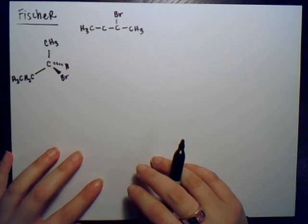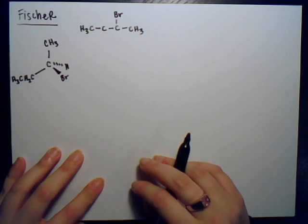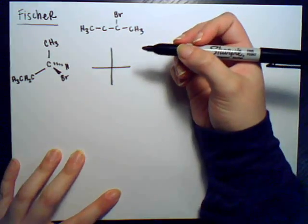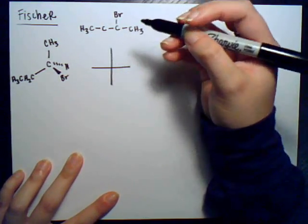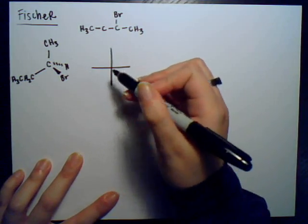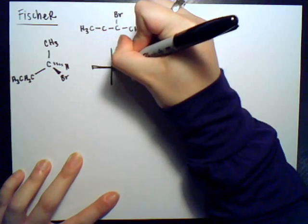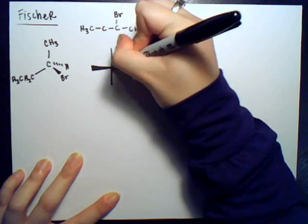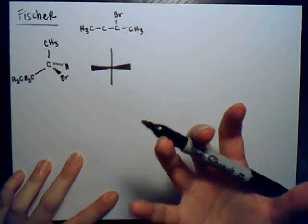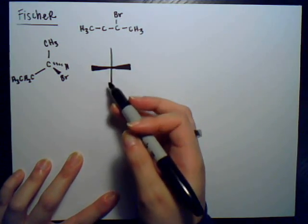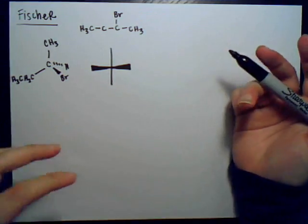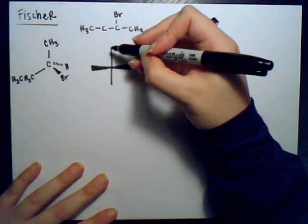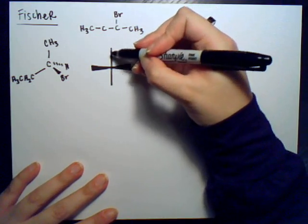A Fischer projection is a two-dimensional way of drawing a three-dimensional molecule, and this helps us manipulate it better. You draw a cross: the vertical line represents going into the page, and the horizontal line represents coming out of the page. A way I like to remember this is like a person with arms outstretched to give you a hug — the arms come towards you, so the horizontal line is like arms coming out of the page. Therefore the vertical line goes into the page.